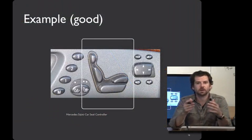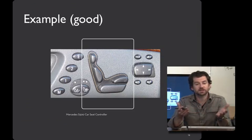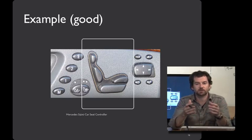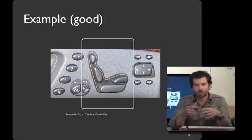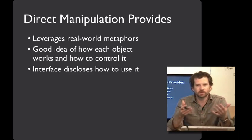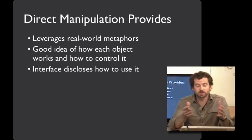The butterfly ballot caused problems because the representation was confusing — what lined up with what was hard to figure out. Here's a much better example: a seat user interface for an automobile that employs a world-in-miniature strategy. It offers controls for manipulating parts of the seat, and the interface is a miniature seat itself. So if you'd like to move the headrest back, you move the miniature headrest back. By having this clear mapping, users are much less likely to make errors. Direct manipulation enables users to behave with much more expertise by leveraging familiar real-world metaphors, helping give users a good idea of how each object works and how to control it. The interface's physical form discloses what functionality it provides.